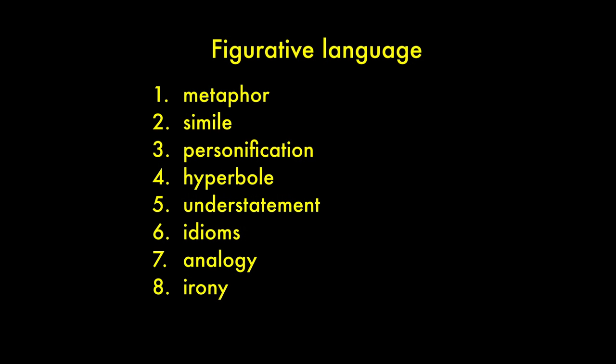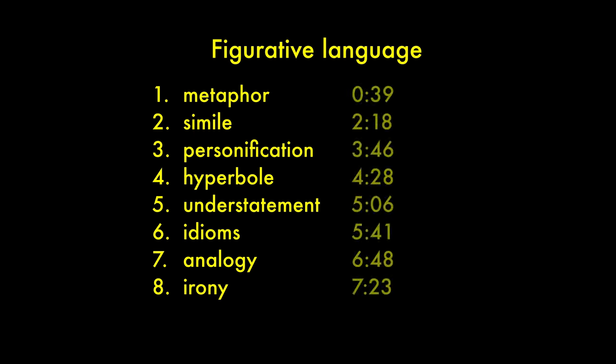So we've talked about these eight kinds of figurative language: metaphor, simile, personification, hyperbole, understatement, idioms, analogy, and irony. There are more kinds, like synecdoche and apostrophe, but these are the main ones. Here's a time index in case you need to rewatch something.